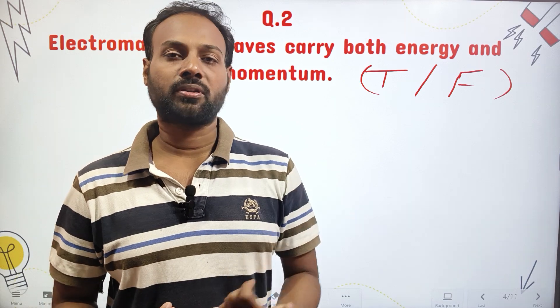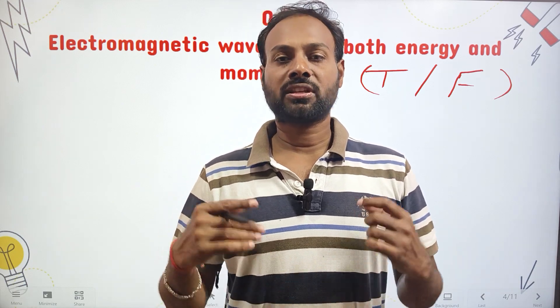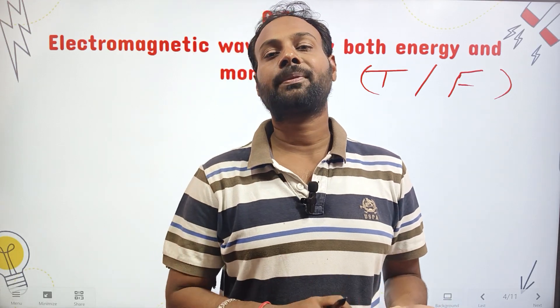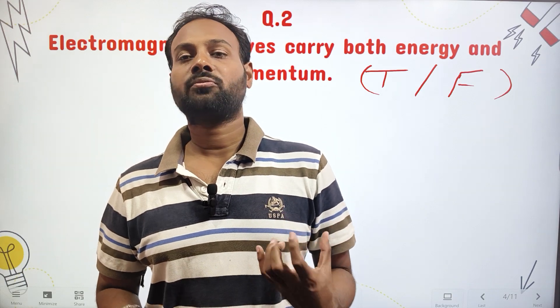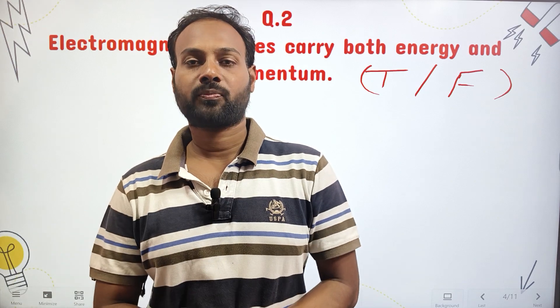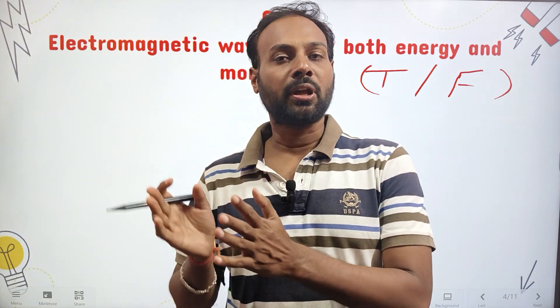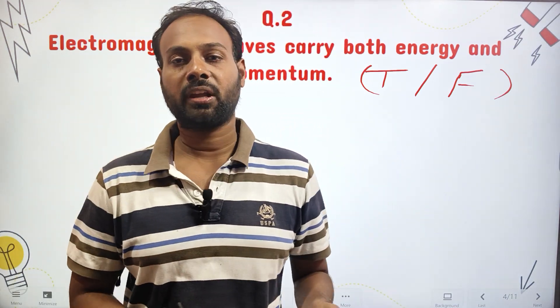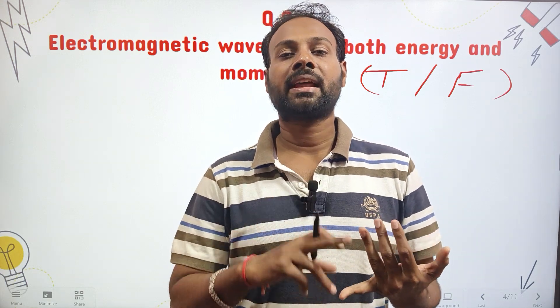First, electromagnetic waves propagate — they do not depend upon any medium while traveling from one point to another. Their velocity is equal to the velocity of light, which is 3 × 10⁸ meters per second. The electromagnetic wave consists of electric and magnetic field components, and the velocity is c = E/B. As it travels, it creates a disturbance, and that disturbance carries energy as well as momentum.